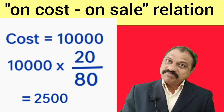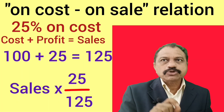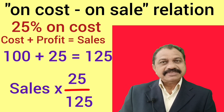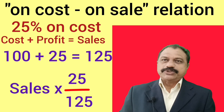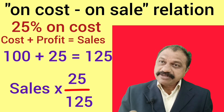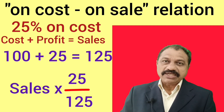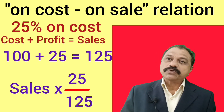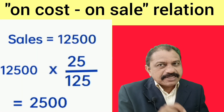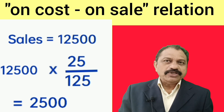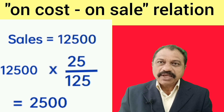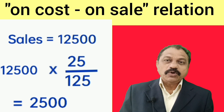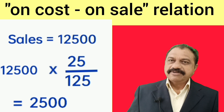Example number four. Suppose sales price is 12,500 and profit is 25% on cost. Calculate cost price. Here profit is 25% on cost, so 100 stands for cost. Cost plus profit equals sales — 100 plus 25 equals 125. Therefore 125 stands for sales price. Sales price given is 12,500. Therefore profit is equal to 12,500 multiplied by 25 divided by 125, which equals 2,500. Therefore cost price is equal to 12,500 minus 2,500, which equals 10,000.